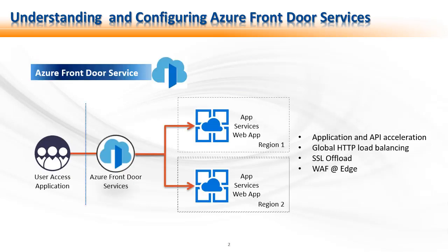After being in the public preview for around a year, Azure Front Door Service has finally become generally available on April 4th, 2019. This service can be compared to Azure Traffic Manager in a way that it also provides global HTTP load balancing to distribute the traffic across different Azure regions, cloud providers, or even with your on-premises applications and services. It additionally provides better performance and instant failover when compared to Traffic Manager.